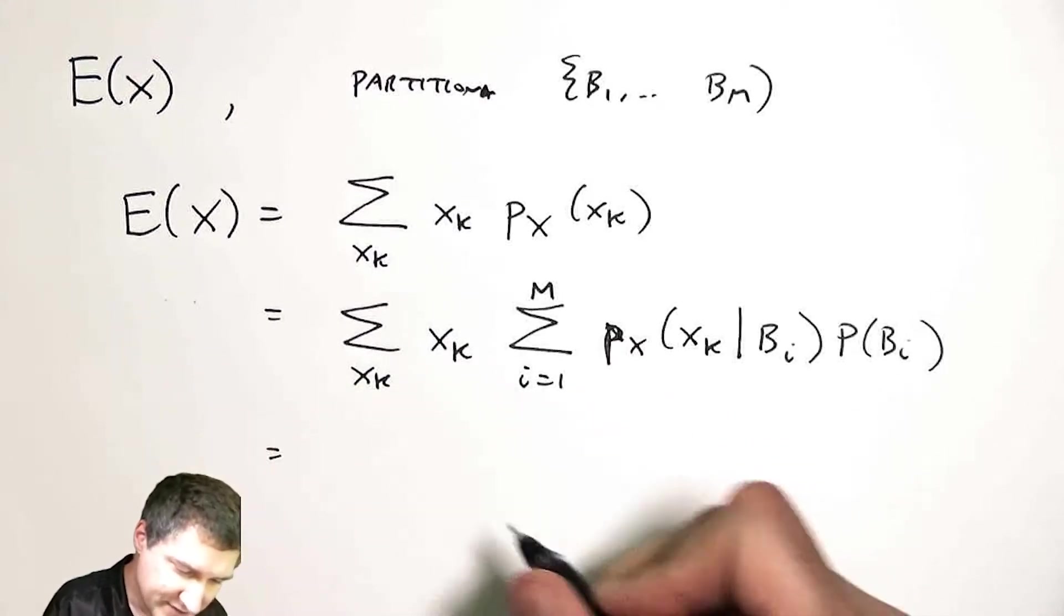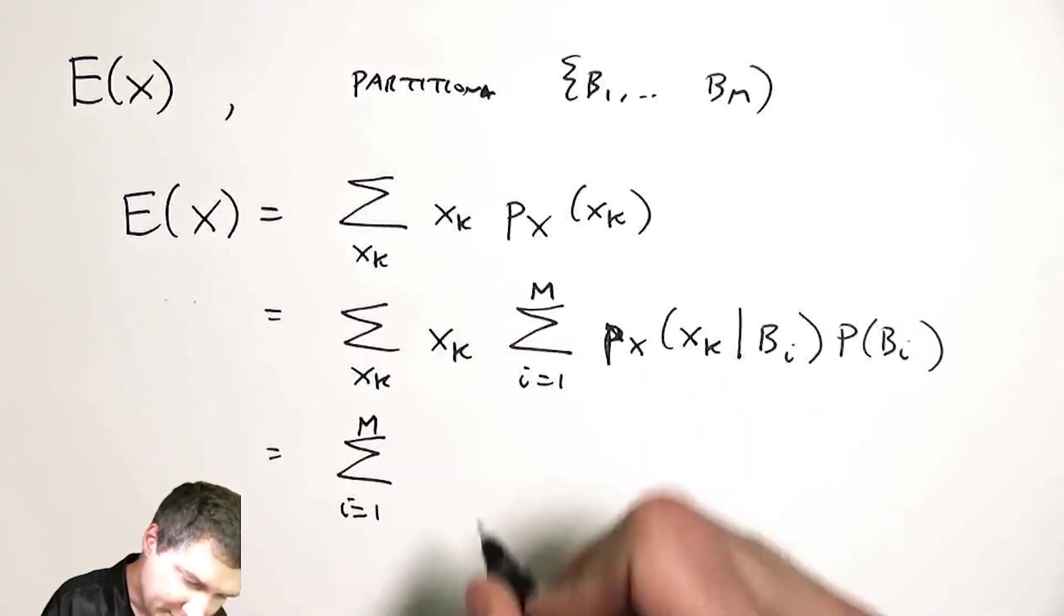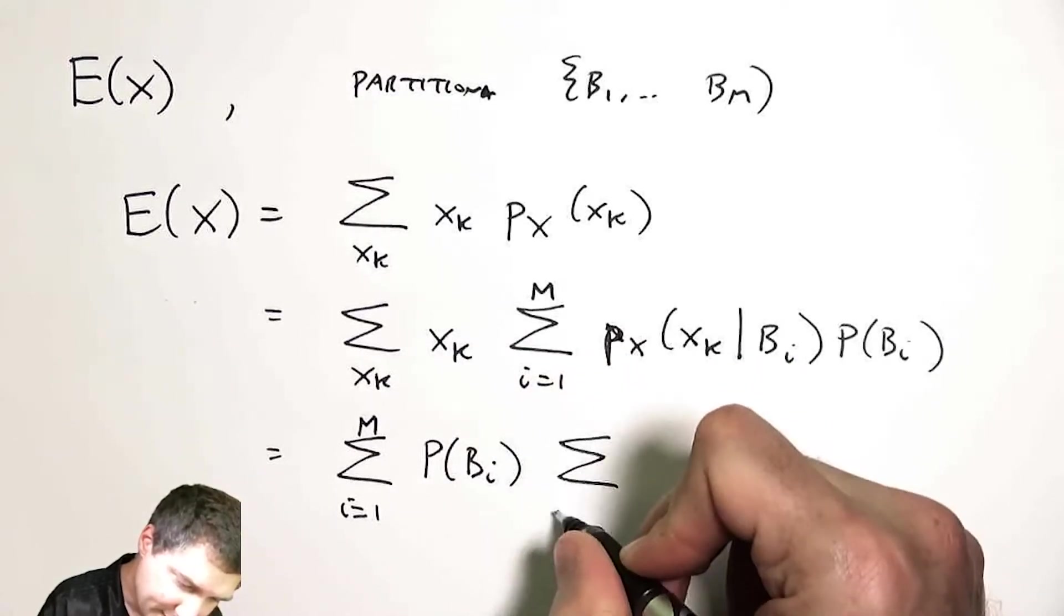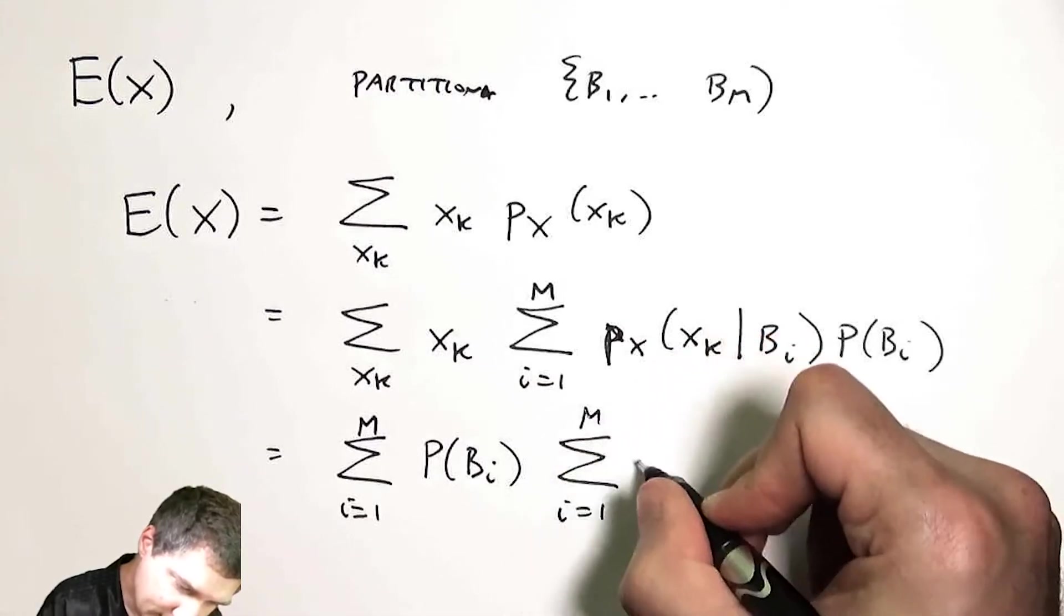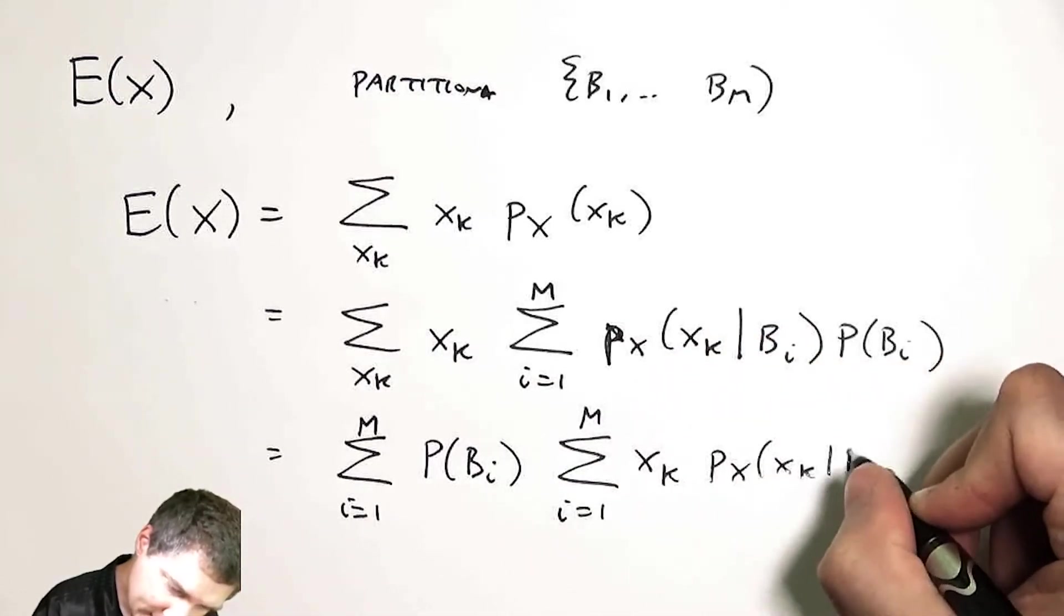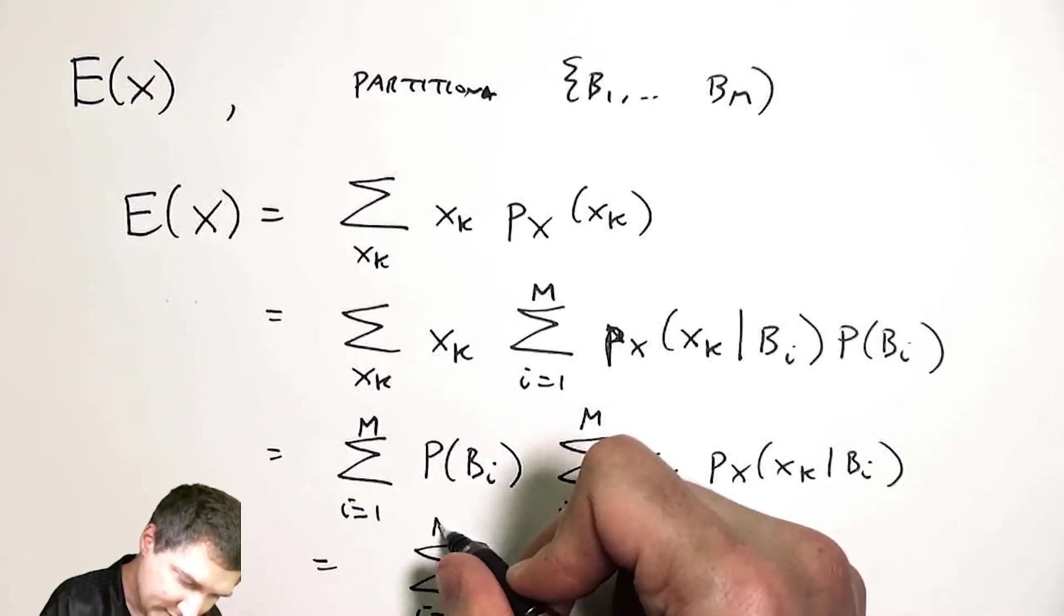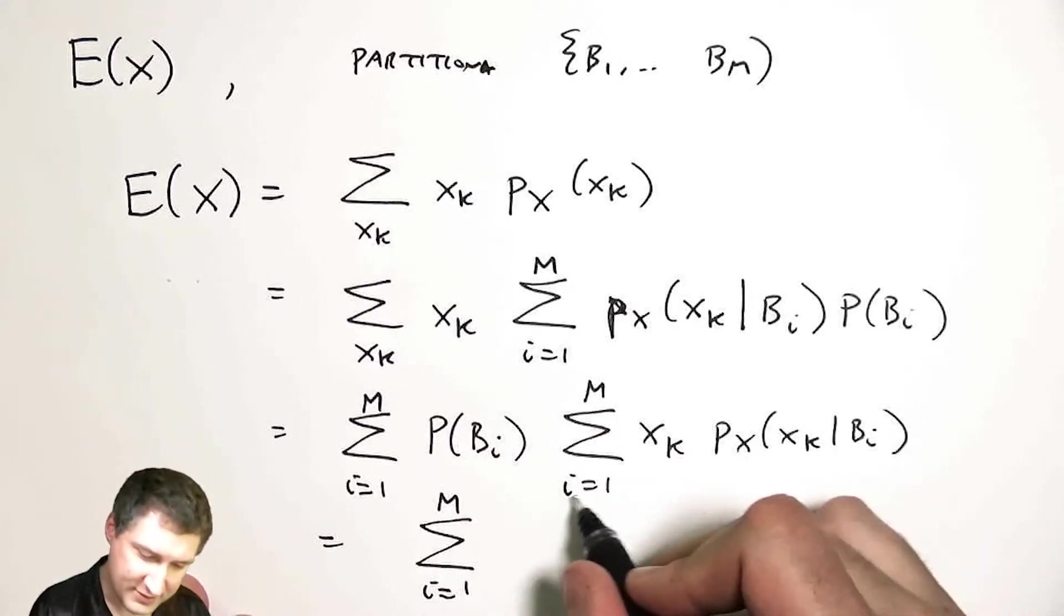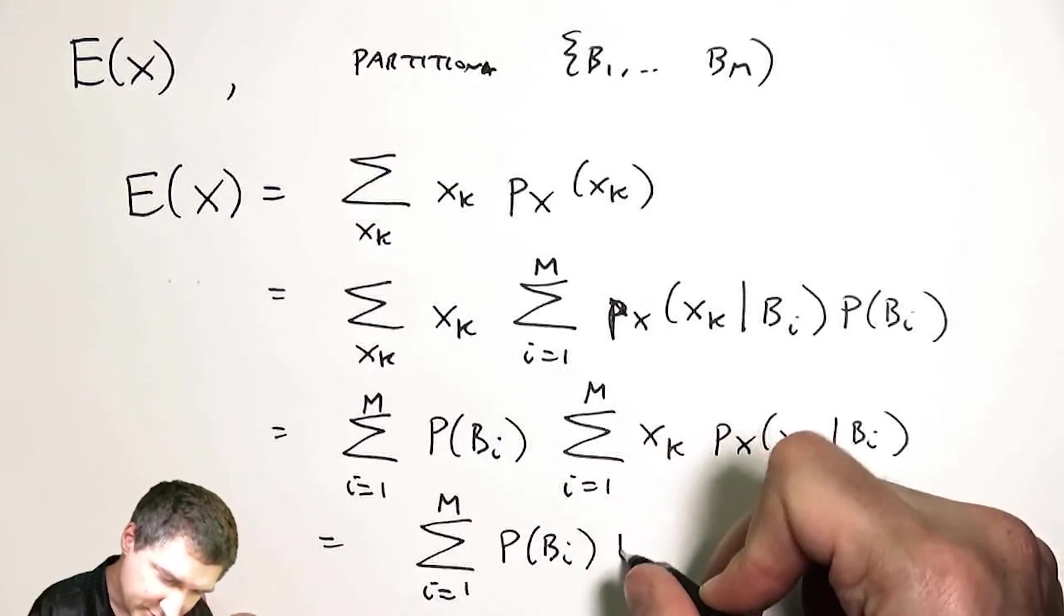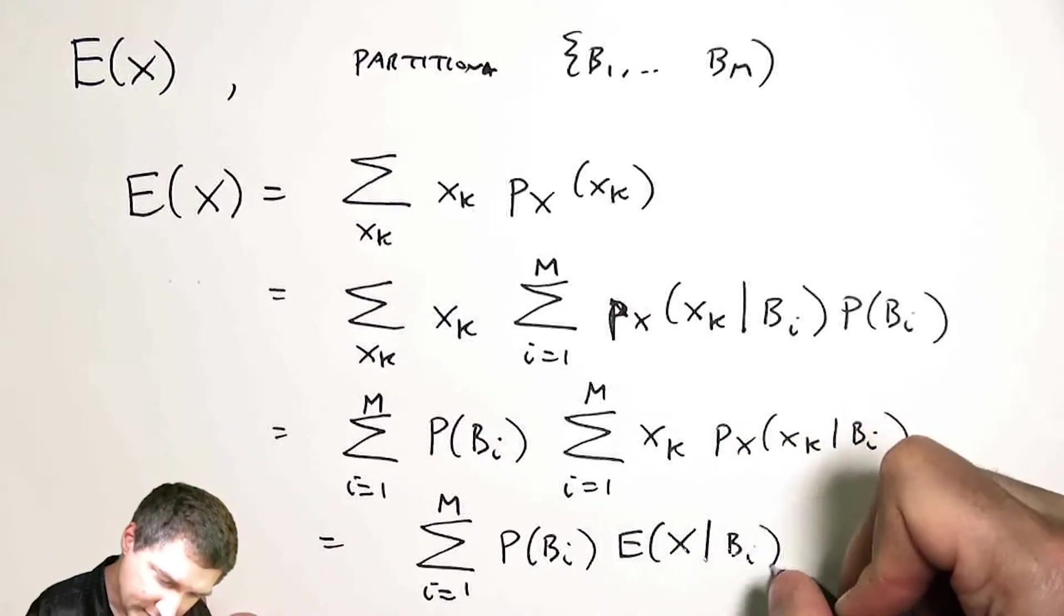And now I can move the sums around to say, I'm going to keep this guy out here, I'm going to move the xk into here. And then I'm going to note that this thing here is just the conditional expected value of this event.